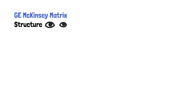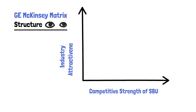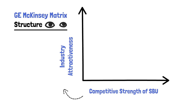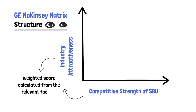The horizontal axis of the GE McKinsey Matrix represents the competitive strength of the individual SBU, whereas the vertical axis represents the industry attractiveness. Both competitive strength and industry attractiveness are determined by a weighted score, calculated from the relevant factors that apply to each.